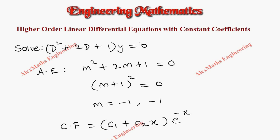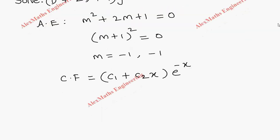And there is no particular integral because the other side is 0. So, we get the solution y is equal to CF plus PI and there is no PI. So, our solution is only CF, that is c1 plus c2x into e power minus x.